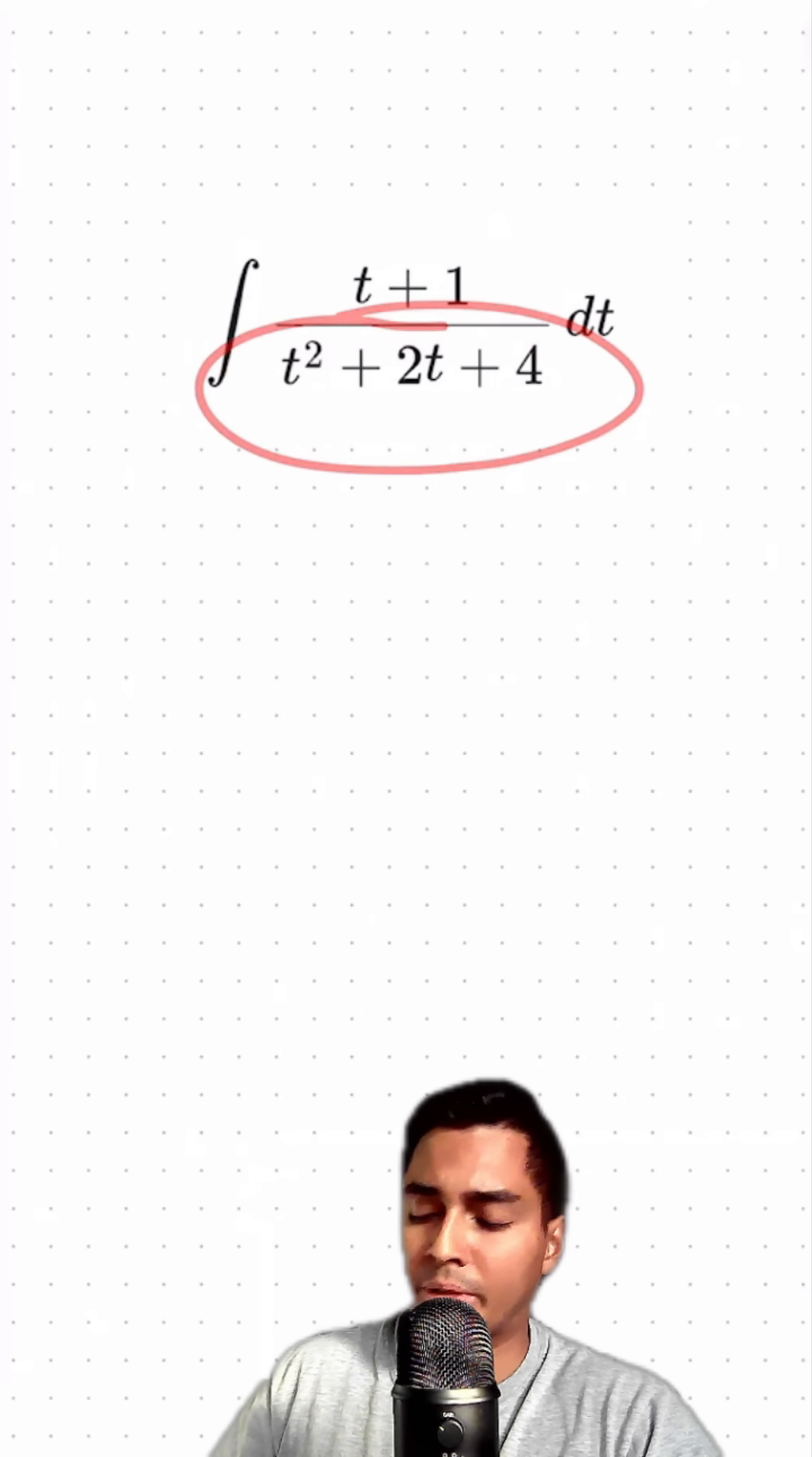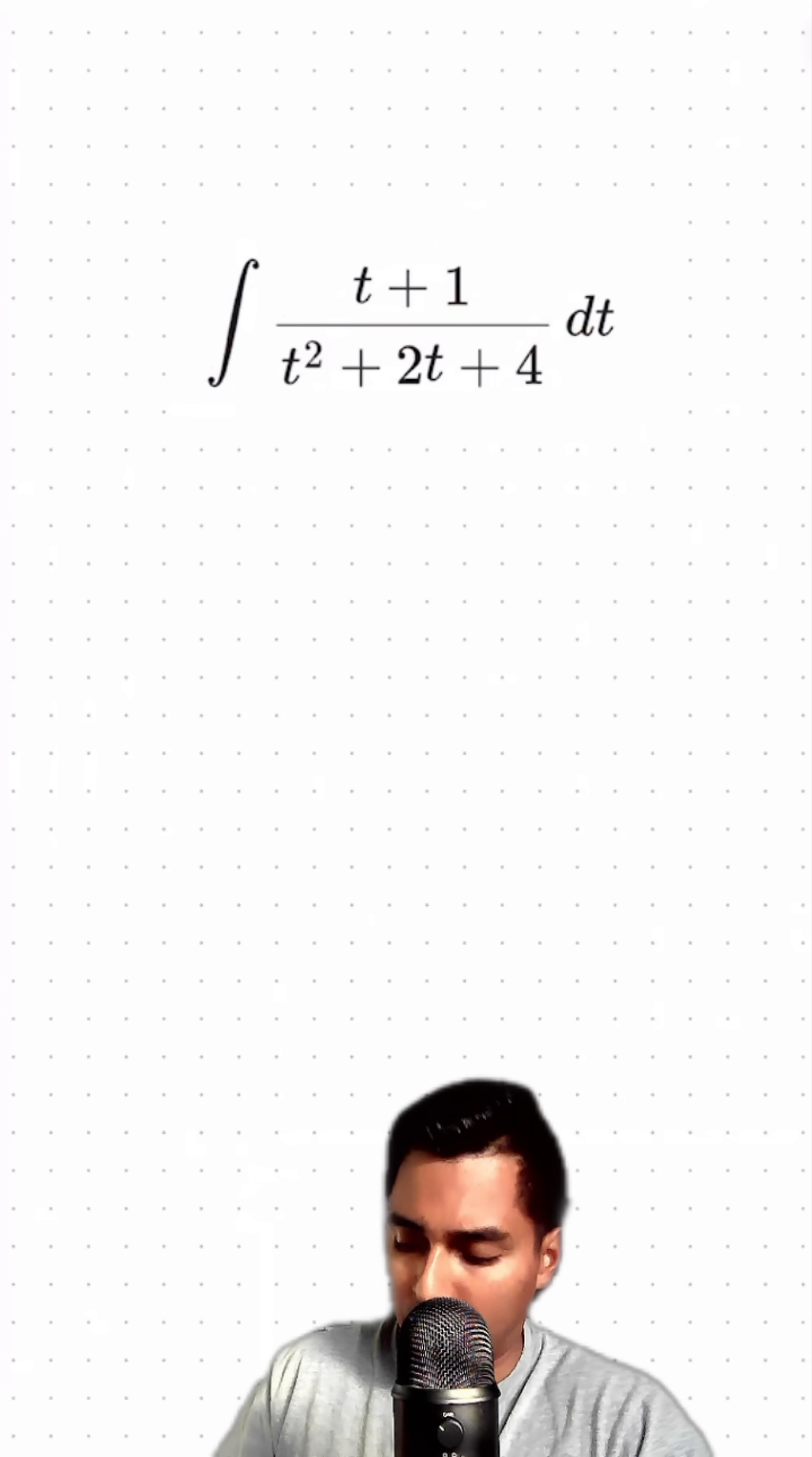Notice if I take the derivative of the denominator, it's going to be similar to the numerator. So that tells us we want a u substitution.